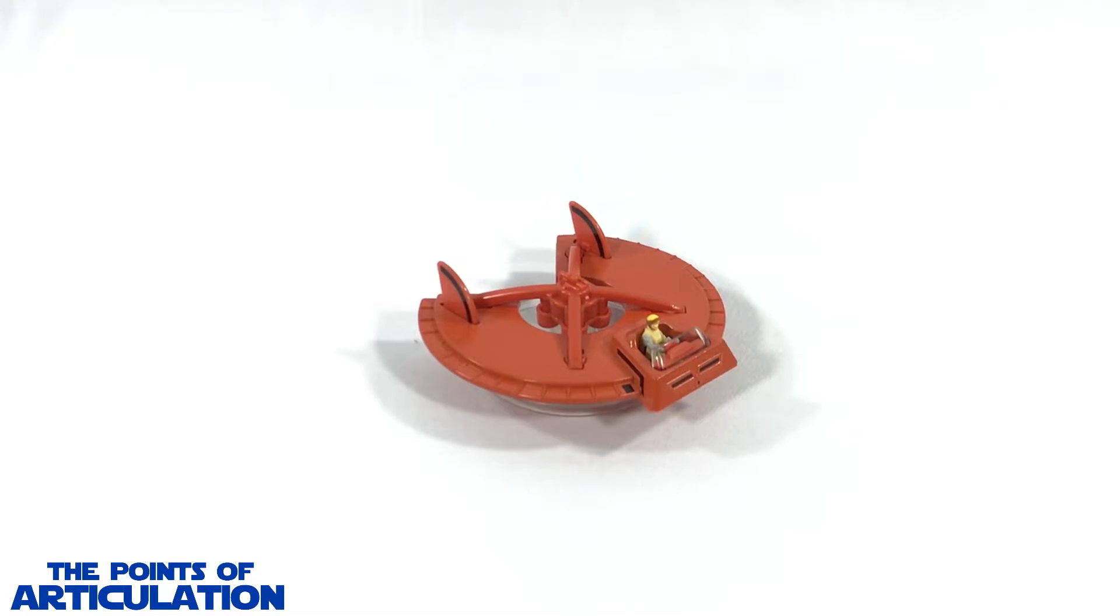This particular land speeder was first seen as a concept model by Colin Cantwell, and I have to say this is another interesting looking vessel. For the size of this diecast model, we're looking at just under three inches long. We're going to take a look at the mold, the paint, put it on a stand, compare it to some other ships, and then we'll be done. So let's get moving.